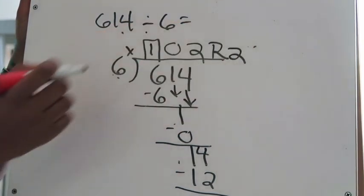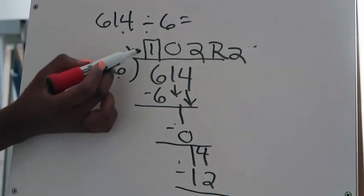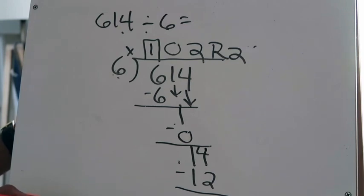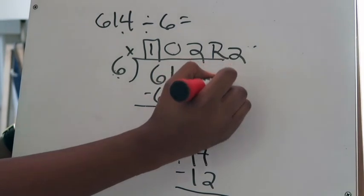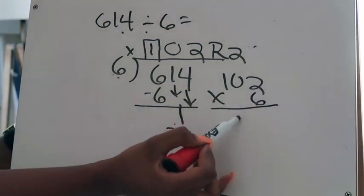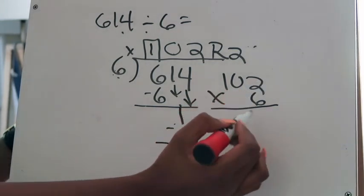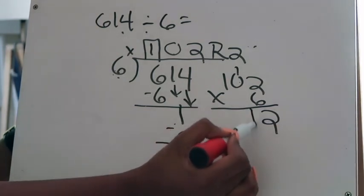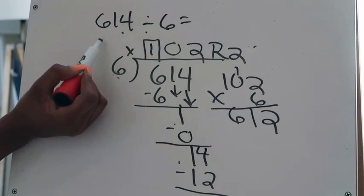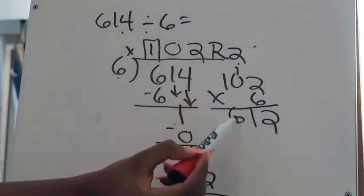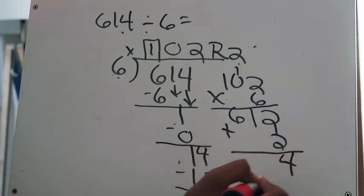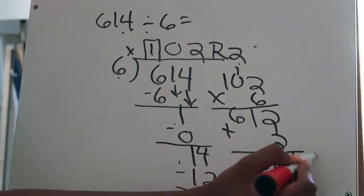My answer is 102 remainder 2. Did I place the first digit correctly? Yes. Does my final answer go up to the hundreds place? Yes. Now I check: I multiply my quotient 102 by my divisor 6. 6 times 2 is 12, 6 times 0 is 0 plus 1 is 1, 6 times 1 is 6 — giving 612. Don't panic if it doesn't match your dividend yet — you had a remainder, so add the remainder 2 to get 614. That matches my dividend, so I'm correct.